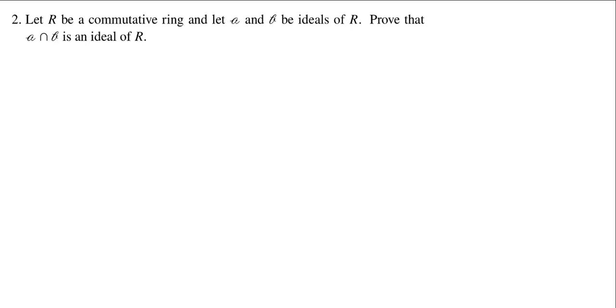And again, we're looking at showing that a subset of a ring is an ideal. So in this problem, we have a commutative ring, and we have two ideals, A and B. What a cool font, huh?